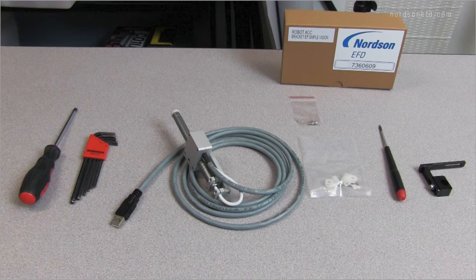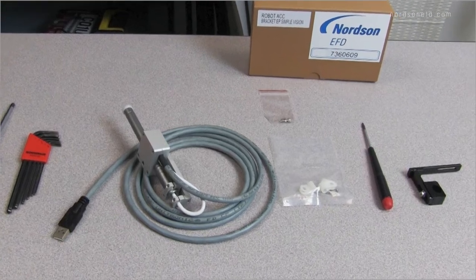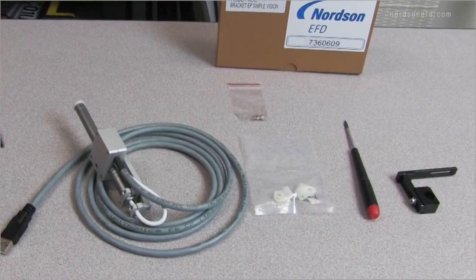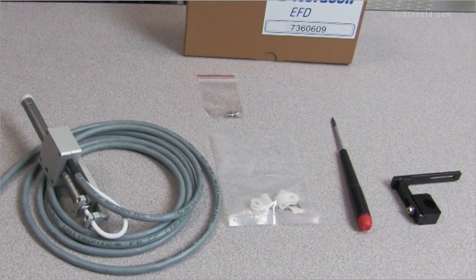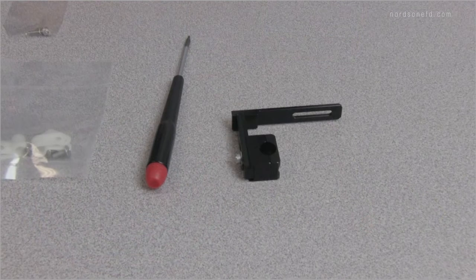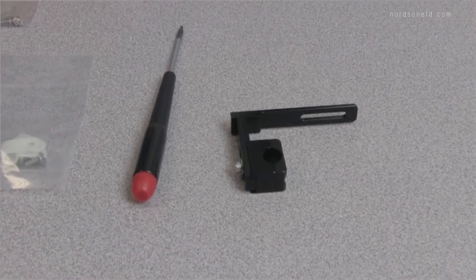Okay, so in today's video we're going to install the simple vision camera onto our robot. What we have on the table in front of us are a couple of tools that we're going to need: a Phillips head screwdriver, an Allen wrench kit, the camera itself, the cable ties that tie it to the robot head, the small screwdriver that's used to adjust the light intensity, and the bracket for mounting it to the robot.